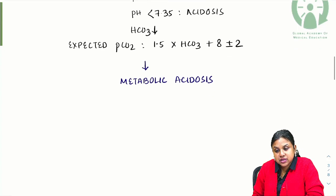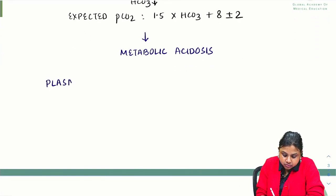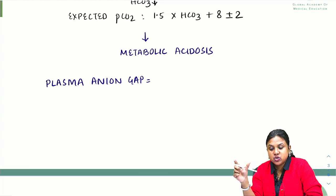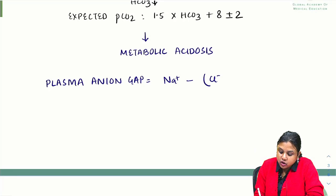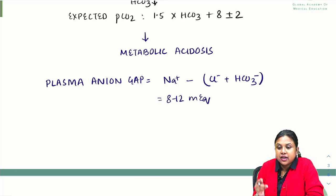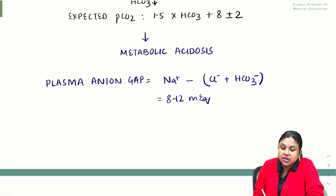The next step is to see what is the plasma anion gap. The formula is sodium minus chloride plus bicarbonate. Normal anion gap is 8 to 12 milliequivalents. After calculating, sometimes ABG machines give you a calculated value of anion gap, or you will get the electrolytes and calculate it from there.